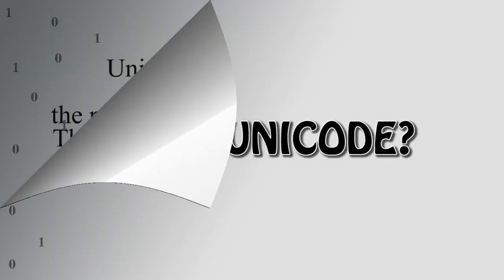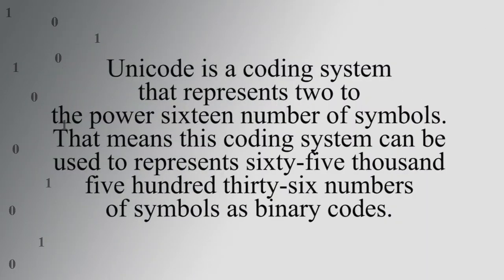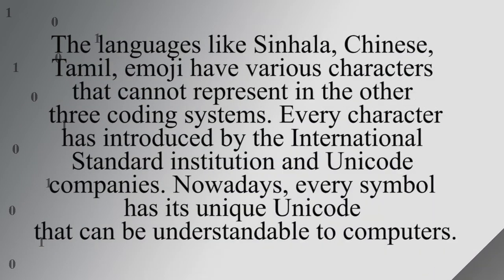What is Unicode? Unicode is the most advanced coding system, representing 2 to the power of 16 number of symbols. That means this coding system can be used to represent 65,536 numbers of symbols as binary codes. Languages like Sinhala, Chinese, Tamil, and Emoji have various characters that cannot be represented in the other three coding systems. Every character has been introduced by the International Standard Institution and Unicode Consortium. Nowadays, every symbol has its unique Unicode that can be understood by computers.